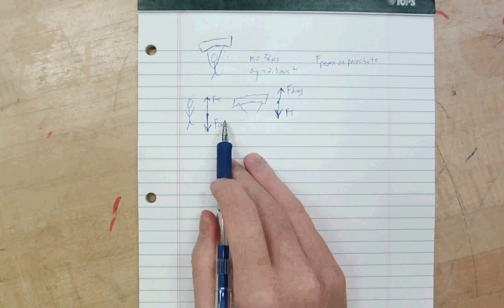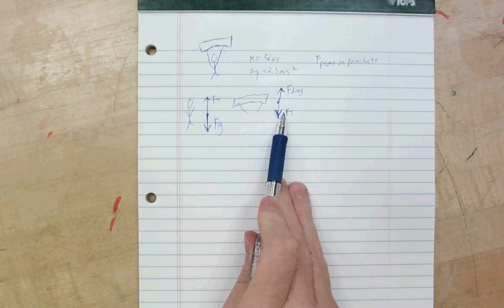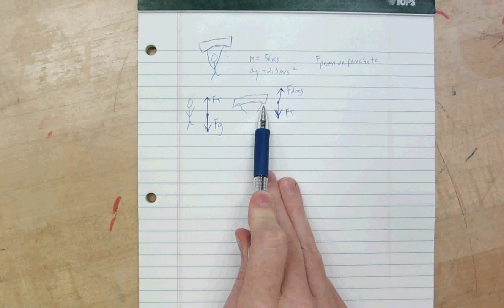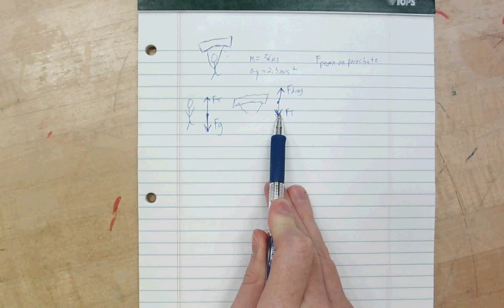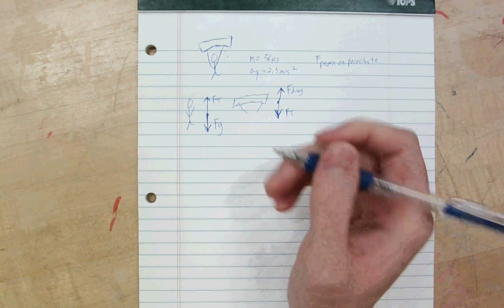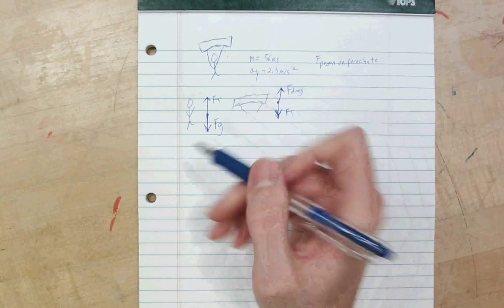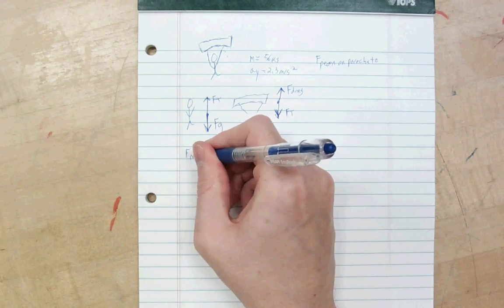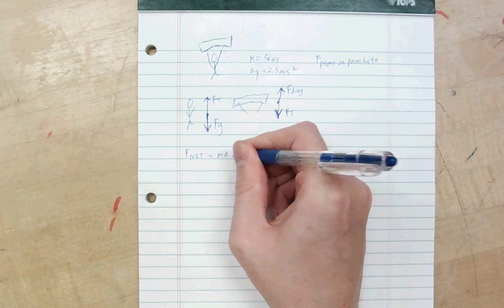Well, what can I do with this? I know something very important. These are the same strings that the person's holding onto and that are attached to the parachute. So, this force of tension is the same everywhere. And I also know, because I'm given the acceleration and the mass, that I should think about Newton's second law. F net equals mass times acceleration.